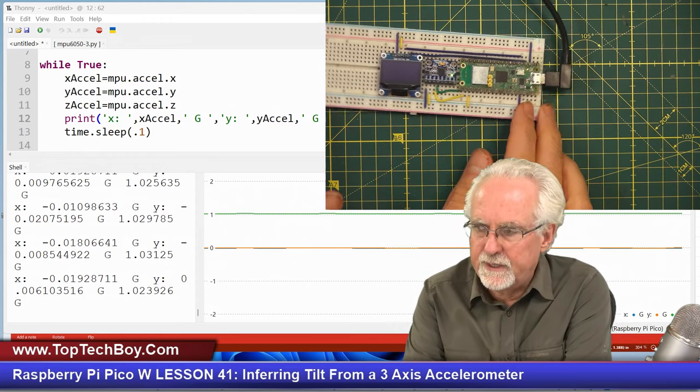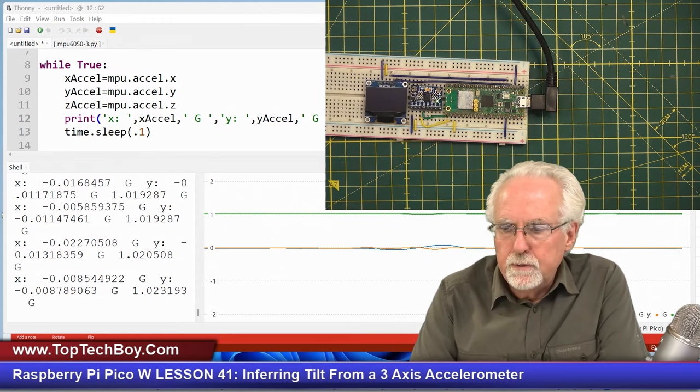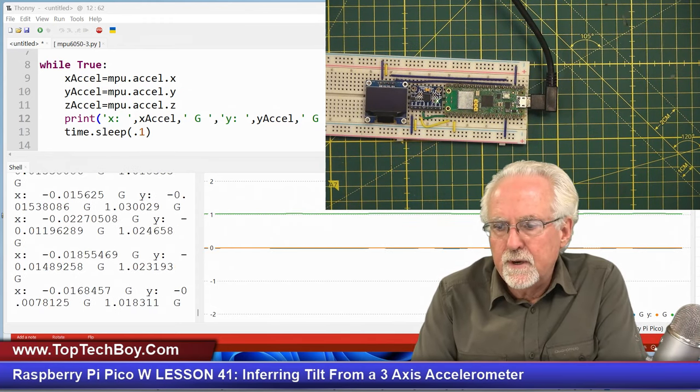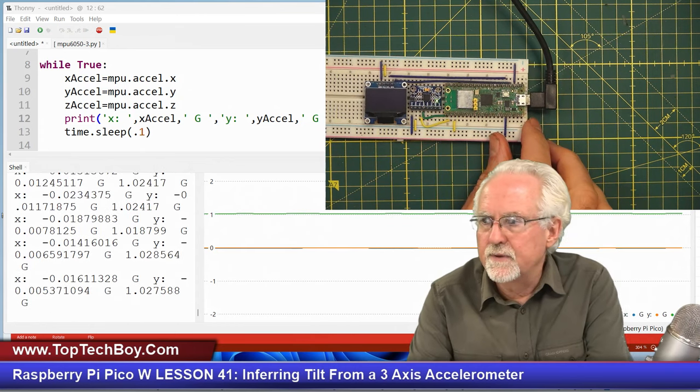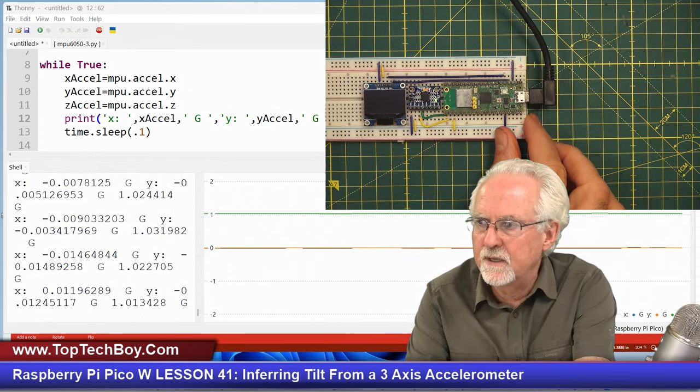That is kind of neat. But now I want you to watch something. The blue curve is the x accelerometer.